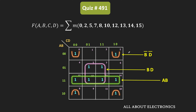If you see this group b̄·d̄, these two 1s are not being covered by any other prime implicant. That means this group b̄·d̄ is an essential prime implicant. Likewise, if you see this group b·d, it is also an essential prime implicant, because minterms 5 and 7 are not covered by any other prime implicants. Therefore, this group b·d also represents an essential prime implicant.